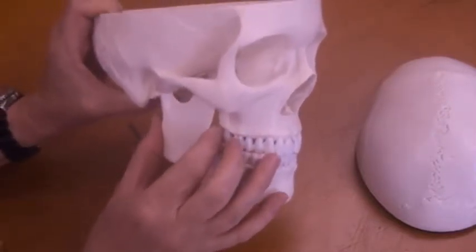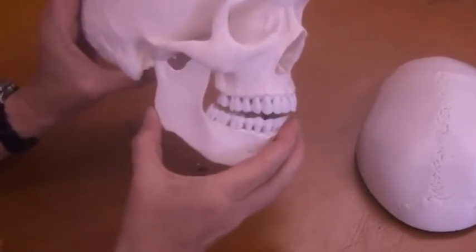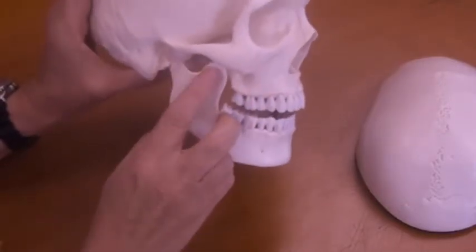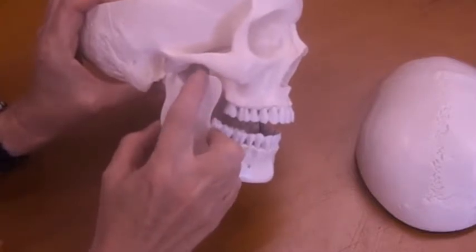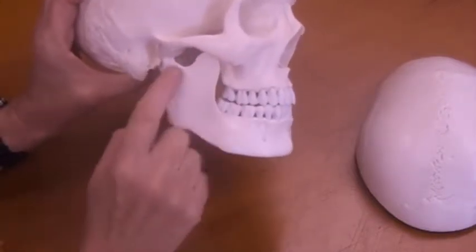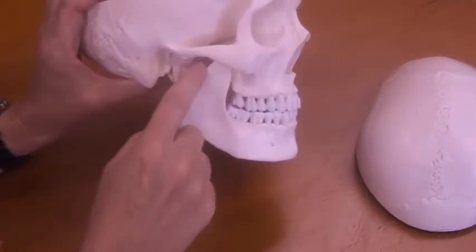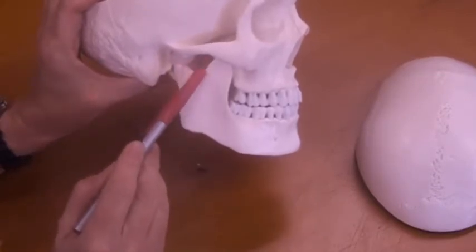It's what forms the articulation with the fossa to form your TMJ, creates a hinge joint here so that you can eat. If we come a little anterior to that, we have this prominence here. This is called the coronoid process. And then you can see this indented area in between those two processes. And this indented area is called the mandibular notch.